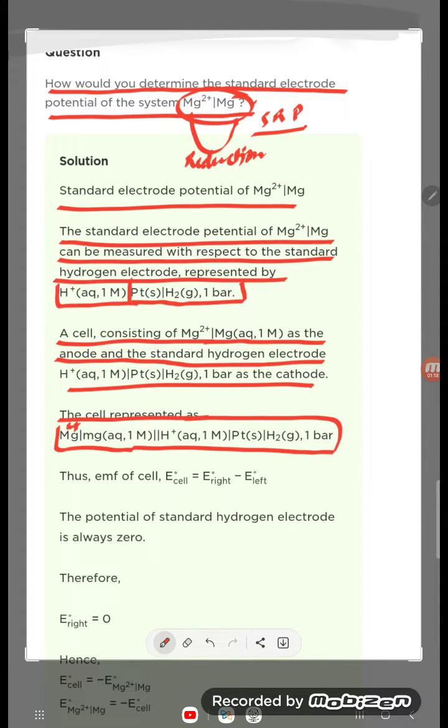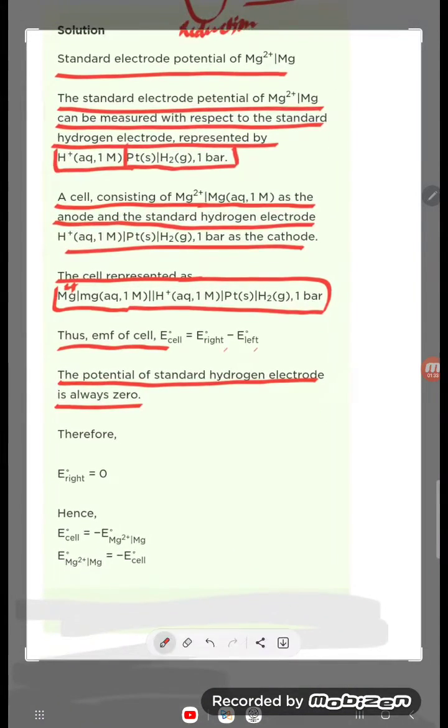Thus, the EMF of the cell will be E_cell = E°_right - E°_left. Now, the potential of the standard hydrogen electrode is always zero. Therefore, E°_right = 0, which means E°_cell = -E°_Mg²⁺/Mg. So E°_Mg²⁺/Mg = -E°_cell.